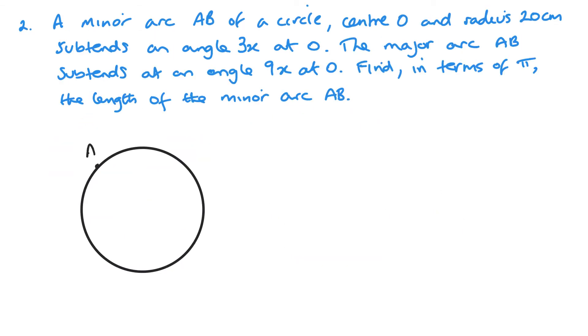Okay, so in this one we have a minor arc AB. Join it up with roughly the center of the circle there. It subtends at 3x. The major arc, so the major arc is this arc here, and that subtends at 9x. Find in terms of pi the length of the minor arc.